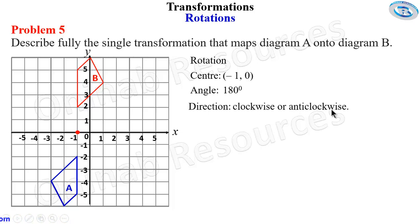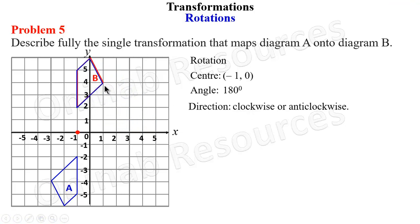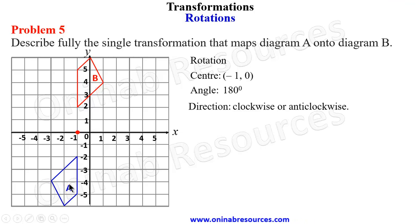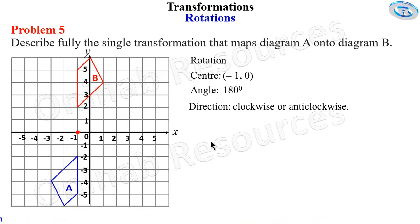The direction for 180 degrees can be either clockwise or anti-clockwise — rotating clockwise still gives the image in the correct position, and anti-clockwise gives the same result. That is the description of the single transformation that maps diagram A onto B. This is the end of problem five and the end of this tutorial. Please like and share this video, and check the description section to get the link to the playlist containing all the videos on transformation. Goodbye.